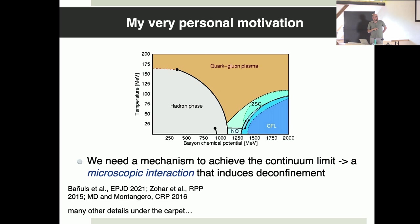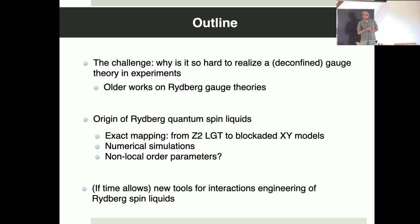I think one of the grand challenges of quantum simulation and quantum information processing is to give information which is novel on this phase diagram. Of course we are very far from there. We want to understand mechanisms that in a quantum simulator can lead to a transition between confined and deconfined phases. The outline I will tell you about starts from this challenge, covering older works that related Rydberg physics with gauge theory, then the new results on the origin of spin liquid, and if time allows, interaction engineering.